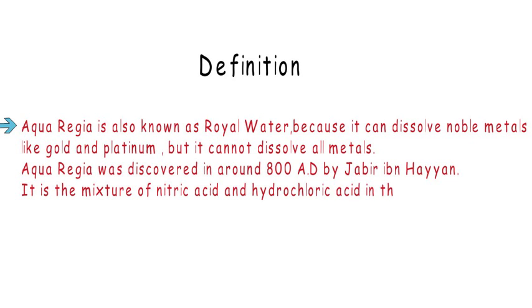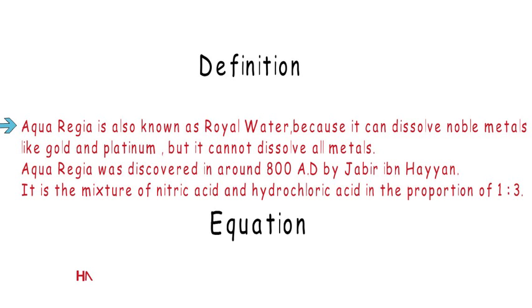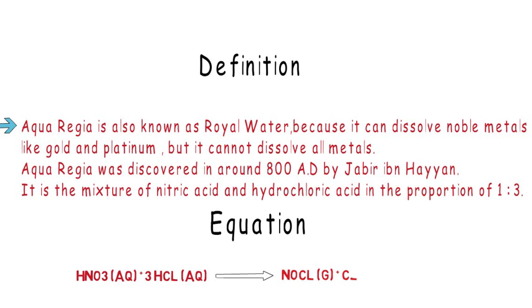It is a mixture of nitric acid and hydrochloric acid in the proportion of 1:3. Its equation is: HNO3 (nitric acid, aqueous) + 3HCl (hydrochloric acid, aqueous) → NOCl (nitrosyl chloride, gas) + Cl2 (chlorine, gas) + 2H2O (water, liquid).